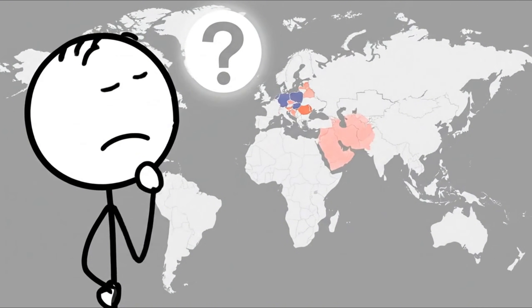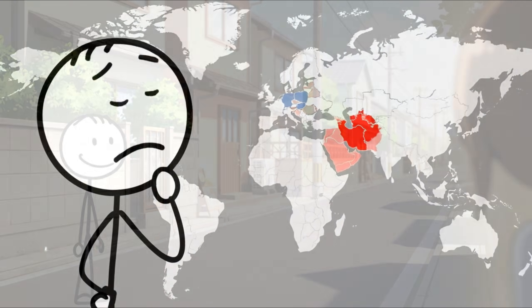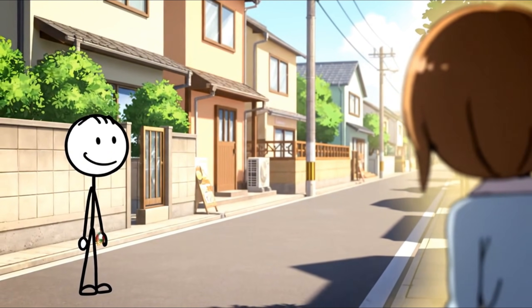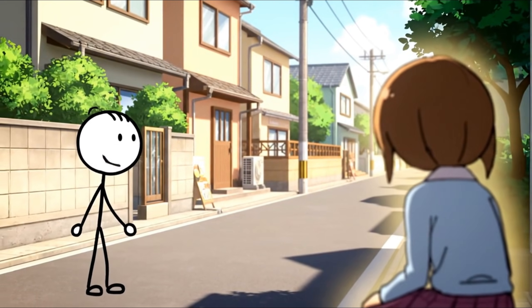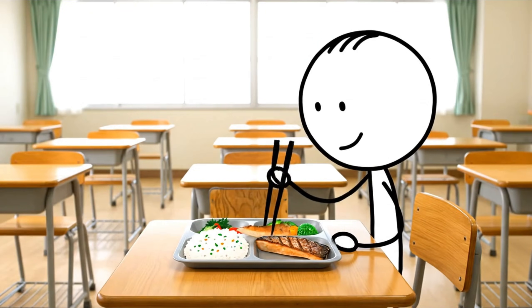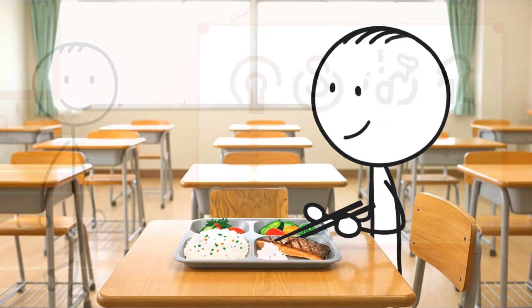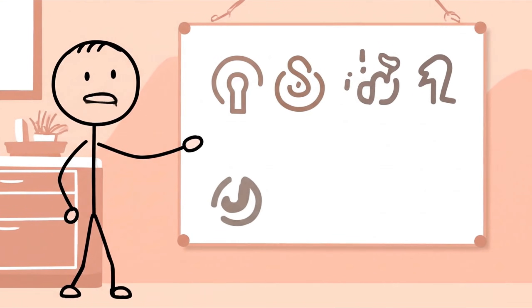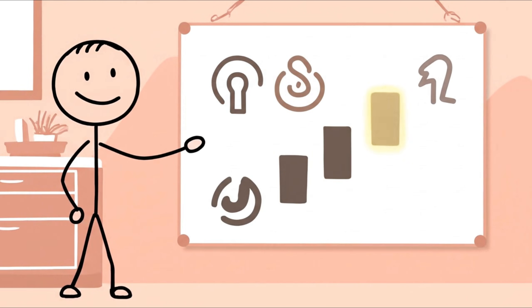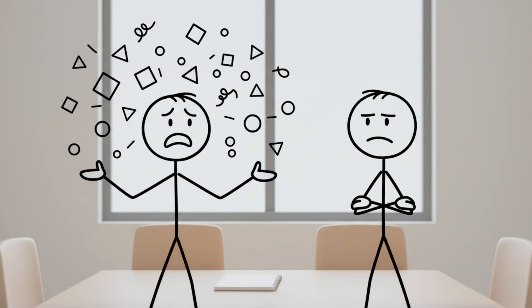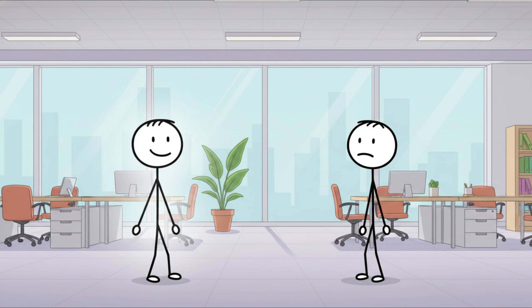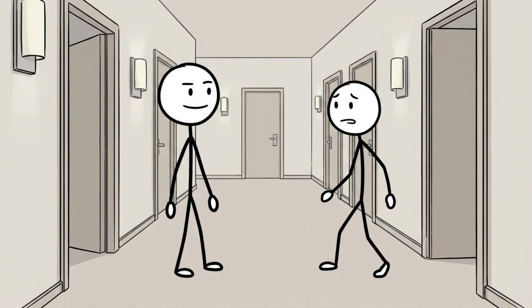Even the right type of cardio can work against you if it's placed at the wrong time or done in the wrong amount. This is where a lot of well-intentioned plans quietly break down. Performing HIIT before your weight training might feel efficient, but it comes at a cost. High-intensity cardio drains neural drive and glycogen, which means your lifting session suffers. Over time, that reduced performance sends a clear signal to the body that strength is no longer a priority. If fat loss is your goal, weight training still has to lead the conversation. That's why research consistently shows that HIIT is best placed either after your lifting sessions or on separate rest days altogether.